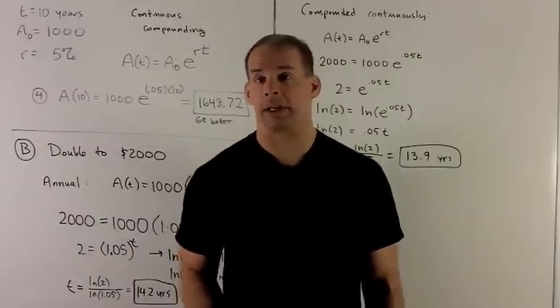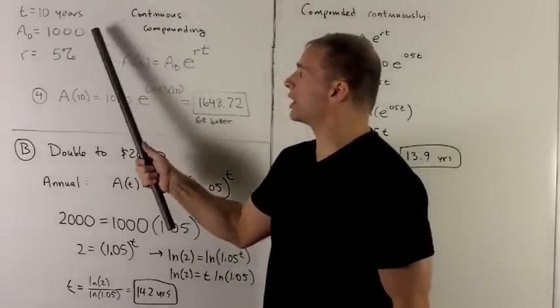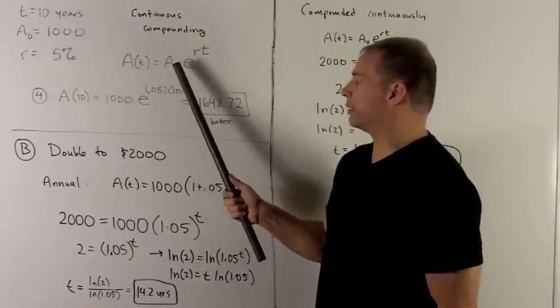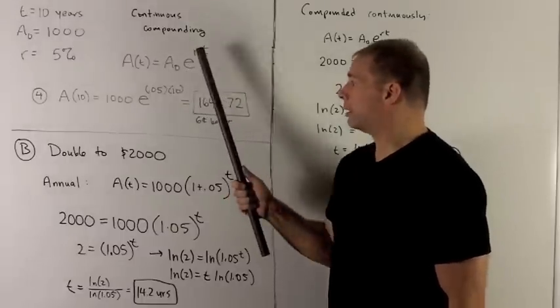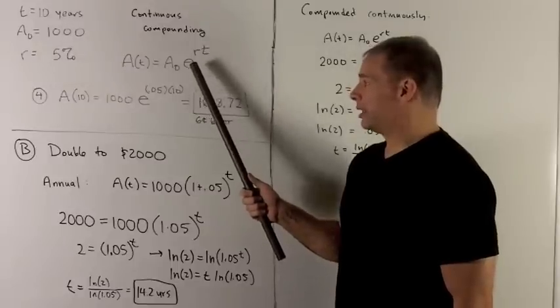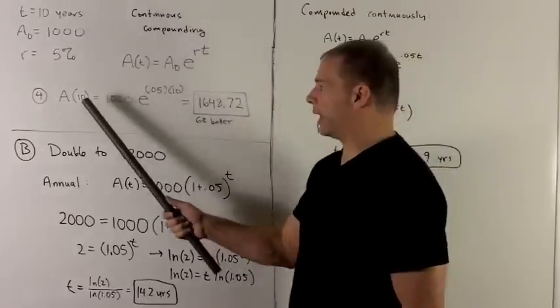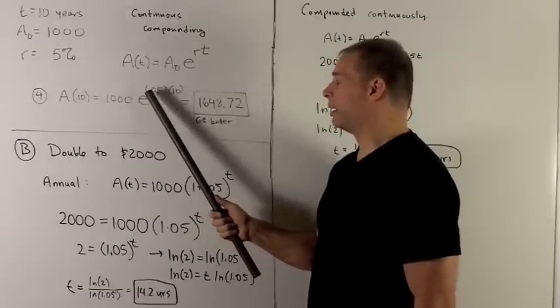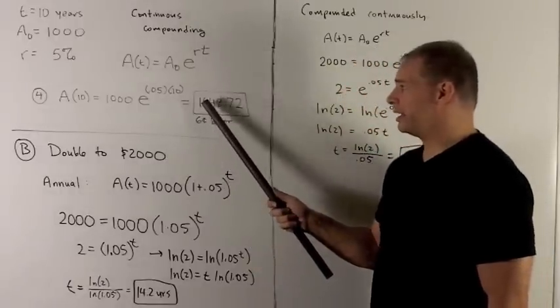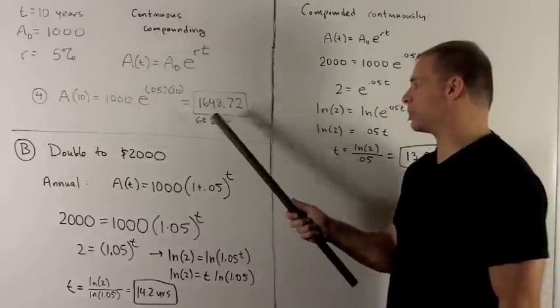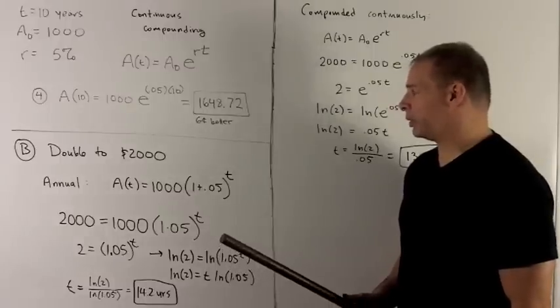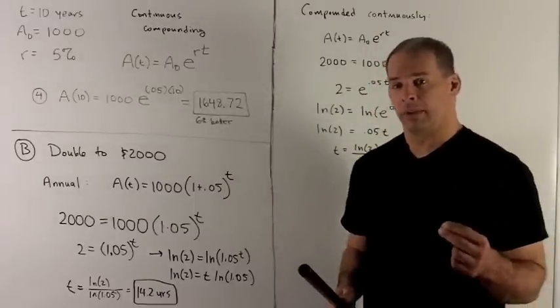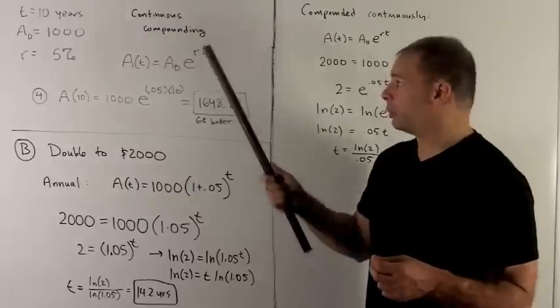We look at continuous compounding. We have our 10 years, $1,000, 5%. The formula for continuous compounding is going to be, take your initial amount, take your rate, if it's in a percent you divide it by 100, multiply it by the amount of time. Then you're going to raise e to that power there. So in this case, we'll have the amount of time 10 years, that's 1,000, times e, 0.05 times 10, it's just going to become 0.5. I put that in the calculator, and I get 1648.72. You notice that this is going to be 6 cents better than when we use compounding daily. So the upper limit on how much improvement you can get by compounding on shorter and shorter periods is going to be hit when we do the continuous compounding.